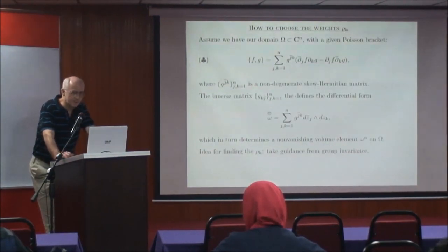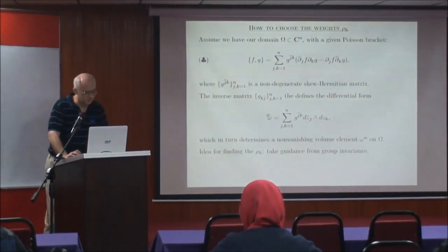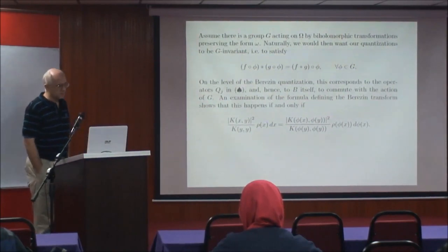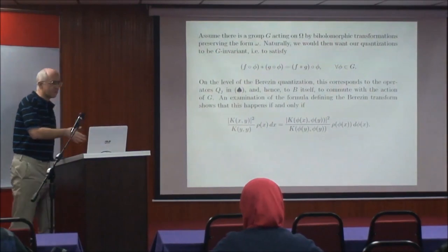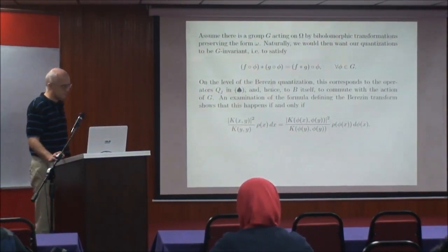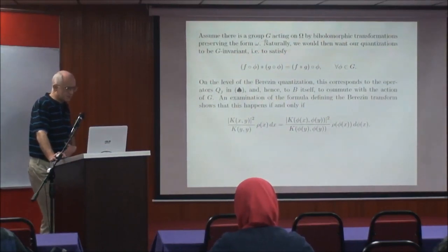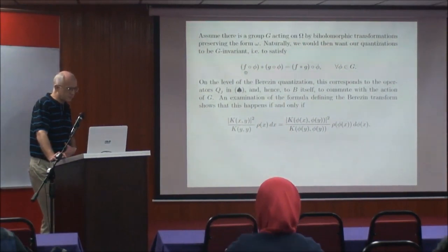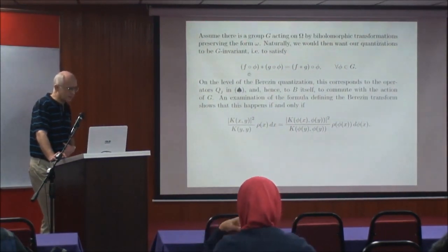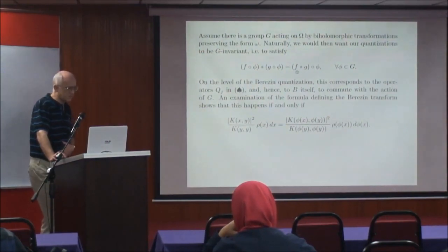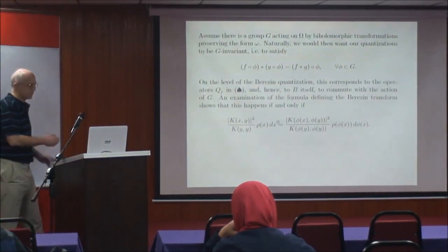How should we choose these weights? There is a heuristic derivation guiding what to do, by looking at what happens when you have a group of symmetries acting on your omega and you want things to be invariant under the group action. Assume there is a group acting on our domain omega in C^n by biholomorphic transformations, which should preserve everything: the Poisson structure and the corresponding form omega. Then we would like our quantization — both the Berezin and Berezin-Toeplitz star products — to be invariant under this group action. For any element phi of the group, if you take functions f and g composed with phi, make the star product, this should be the same as first taking the star product of f and g and then composing with phi.